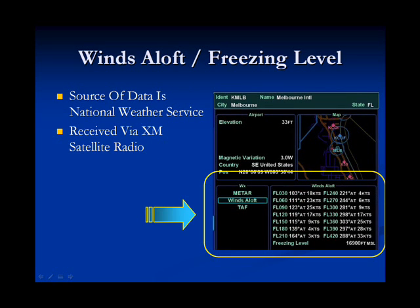The last page shown here displays winds aloft and freezing level information. The winds aloft data displays bearing and speed of wind at various flight levels. The flight levels start at 3,000 feet and continue up to 42,000 feet at 3,000 foot intervals. The freezing level is the point in the atmosphere at which the freezing point has been reached; shown here, the freezing level is approximately 17,000 feet. This data is also received via XM satellite radio and is updated periodically. The source of this data is the National Weather Service.